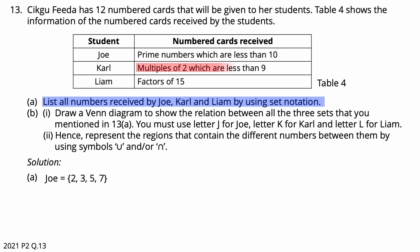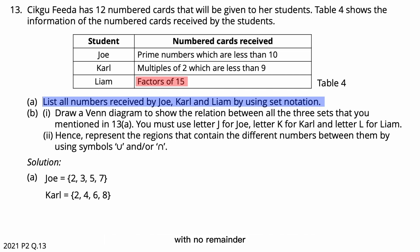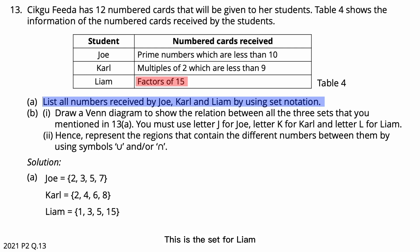Multiples of 2 which are less than 9 — that is, 2, 4, 6, and 8 — form the set for Carl. Factors of 15: a factor is a number that divides another number with no remainder. So 1, 3, 5, and 15 are factors of 15, and this is the set for Liam.